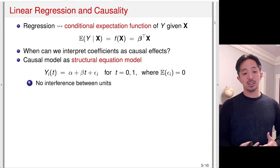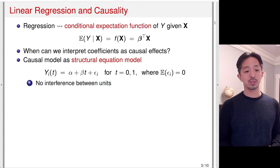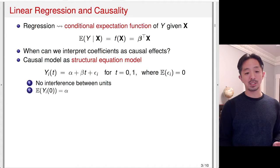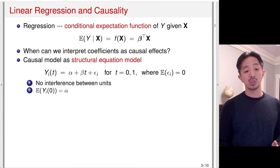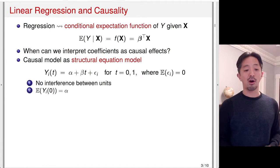This model assumes no interference between units, because the potential outcome is only written as a function of your own treatment status, not a function of the treatment status of others. We can also see that the expected potential outcome under the control condition — plugging in t equals 0 — gives alpha plus epsilon i. Since the expectation of epsilon i is zero, the expectation of the potential outcome under control equals alpha. So the intercept represents the mean potential outcome under the control condition.